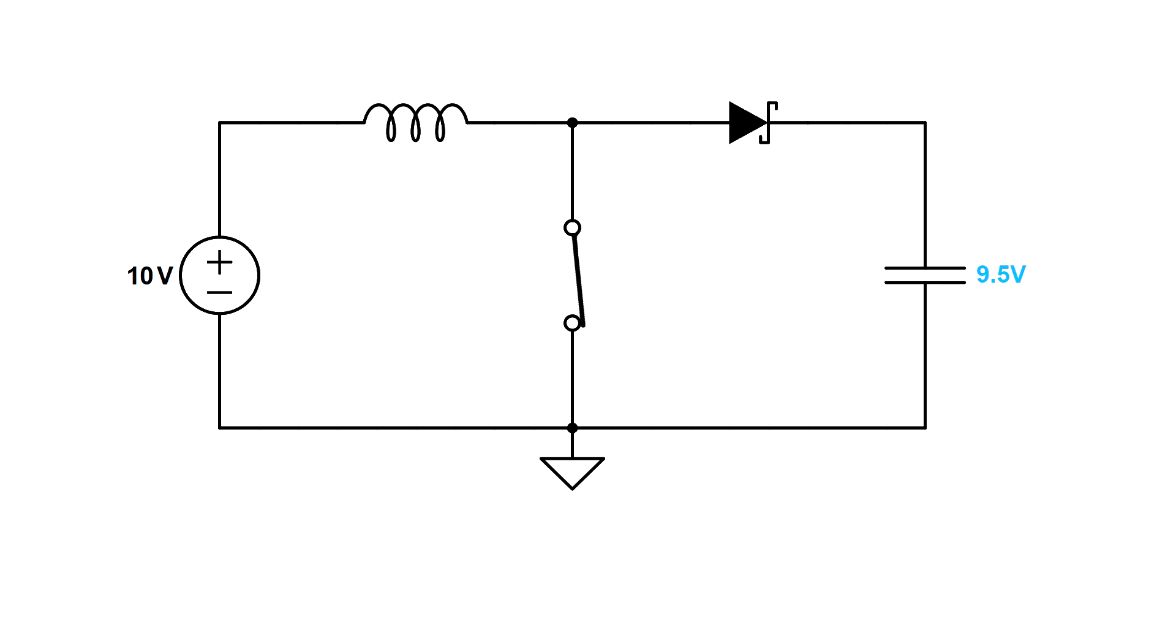Next, let's close the switch. The diode prevents the capacitor from discharging, so the output stays at 9.5 volts. But now we have a current path from the input, through the inductor, straight to ground. If we keep the switch closed like this, we'd basically be short-circuiting the input through the inductor. Inductors don't like it when you do that, so we're not going to do that.